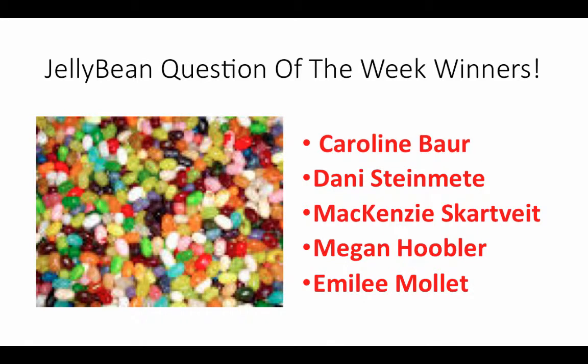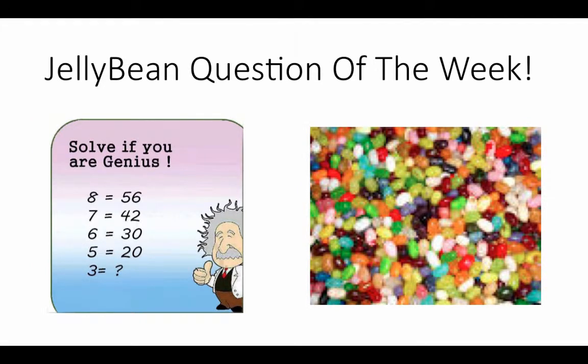My jelly bean question of the week winners from last week — congratulations to Caroline Bauer, Danny Stenmate, Mackenzie Skartveit, Megan Hubler, and Emily Mullet. Come see me before or after school, bring a friend — I've heard a rumor they get rewarded with jelly beans too. Now, new jelly bean question: Solve if you're a genius — if 8 equals 56, 7 equals 42, 6 equals 30, and 5 equals 20, then what does 3 equal? Get your answer in the Bob Lesson box between Mr. Myers and myself and Ms. Pannis' office by Friday for a chance to win.